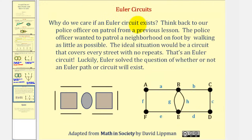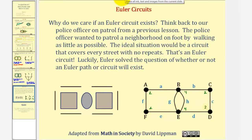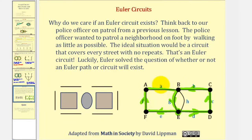You might be asking why we care if an Euler circuit exists. Think back to our police officer on patrol: the officer wanted to patrol a neighborhood on foot by walking as little as possible. The ideal situation is a circuit covering every street with no repeats — that's an Euler circuit. Looking at this graph, vertices A, F, C, and D all have degree two, and vertices B and E have degree four. Because all vertices have even degree, this graph does have an Euler circuit. One possibility: start at E, go to D, C, B, back to E, F, A, B, and finally back to E.